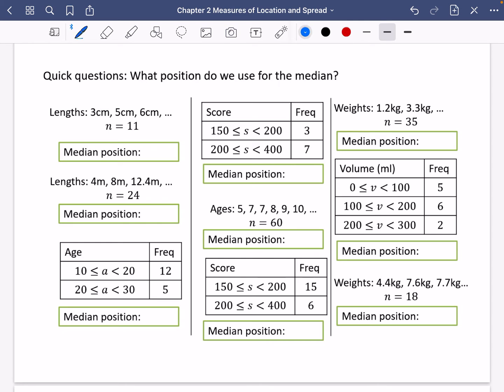Okay, so for this first one, n is 11. They're listed data. So I'm just going to do 11 divided by 2, which is 5.5. And it says if it's a decimal, you round it up. So it would be the sixth one. This one is 24. So I'll do 24 divided by 2, which is 12. So it's a whole one. So you're going to go halfway between the 12th and the next one, which is the 13th.